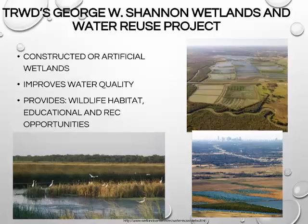Releasing wastewater effluent into wetlands can help restore marshes because nutrients in the wastewater increase marsh grass growth. Artificial wetlands improve water quality and provide wildlife habitat and opportunities for education and recreation such as bird watching. Here in Texas, the Tarrant Regional Water District's George W. Shannon Wetlands and Water Reuse Project is a functional artificial wetland that will soon serve as a water supply for the district.